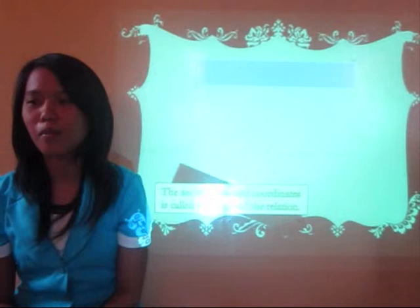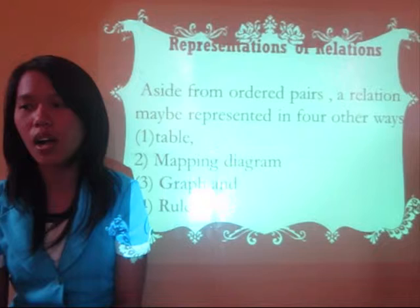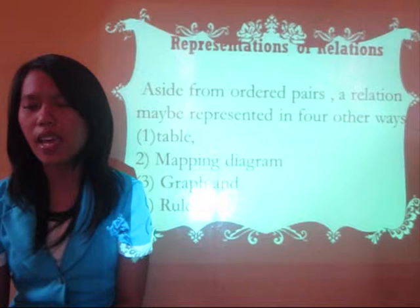The first topic is the representation of relations. Aside from ordered pairs, a relation may be represented in four other ways: first, the table; second, the mapping diagram; then graph; and rule.